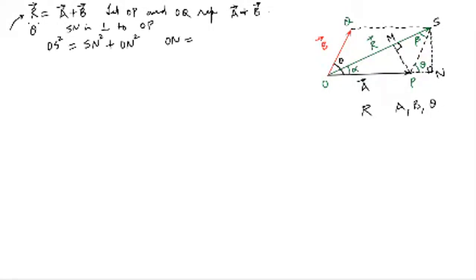We know that ON is equal to OP plus PN. So ON equals OP, which is the magnitude of vector A. I can write the magnitude of vector A as OP, as A, or as the modulus of vector A — they are all the same. So ON equals OP, which equals A.